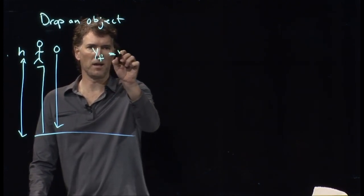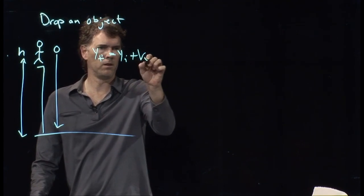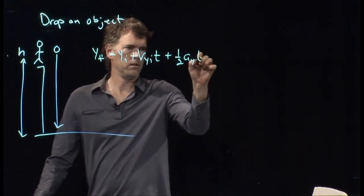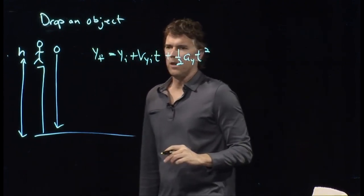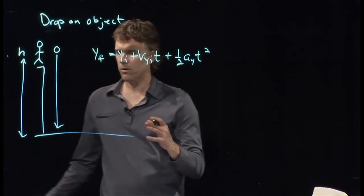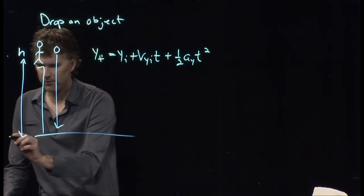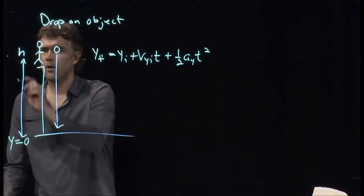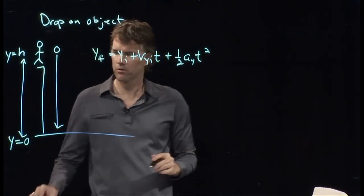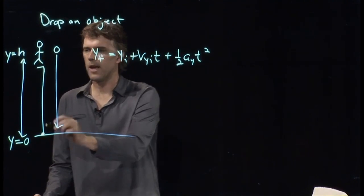So we go back to our kinematic equations. And now we can probably just plug in these numbers. Whenever you have a picture like this, you always have to identify some coordinate system. We'll say that y equals zero starts at the ground and goes up.